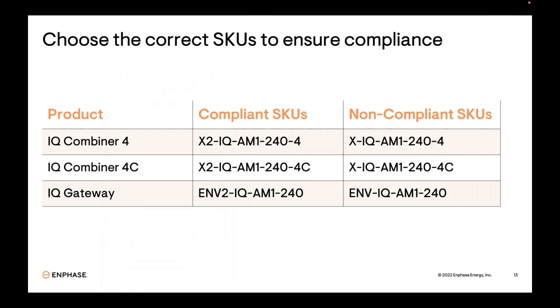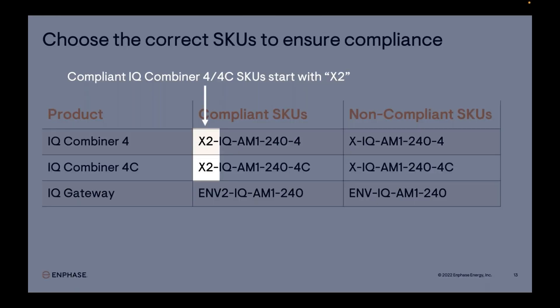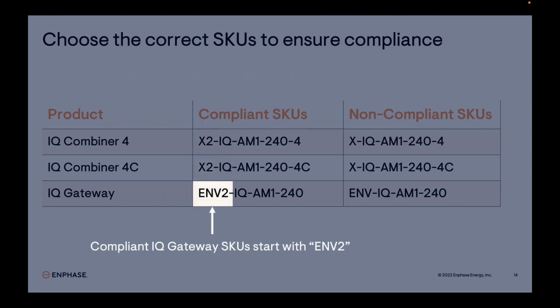The new compliant IQ Combiner 4 SKU begins with X2; the non-compliant SKU begins with just X. If you don't see a 2 after the X, it's not the new compliant model. The same is true for the IQ Combiner 4C, which is simply the Combiner 4 with an included cell modem. The new compliant IQ Gateway SKU begins with ENV2, whereas the non-compliant SKU begins only with ENV — no 2 means it's the non-compliant version.